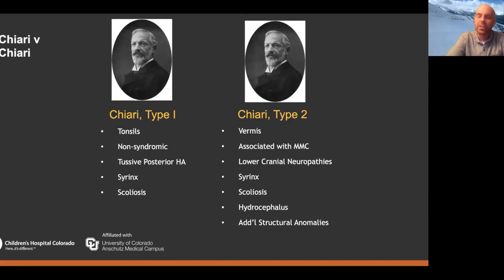In both conditions you can have syringomyelia and scoliosis — in fact, that's incredibly common in kids with myelomeningocele. But kids with myelomeningocele much more often have hydrocephalus, which you have to think about in the context of managing their Chiari.